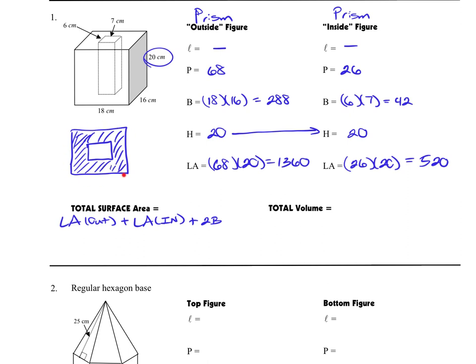So this base, if we looked at this from the top, would be this part right here that I've redrawn, which would be the area of the larger rectangle, 288, minus the area of the smaller rectangle of 42, which will give us 246. That is what we're going to use for the area of that base.